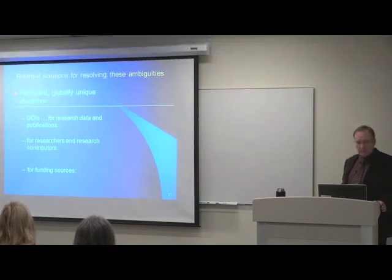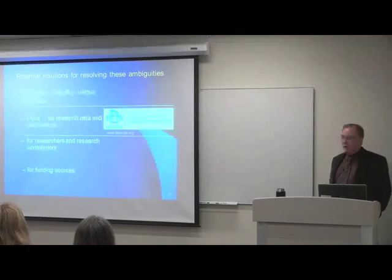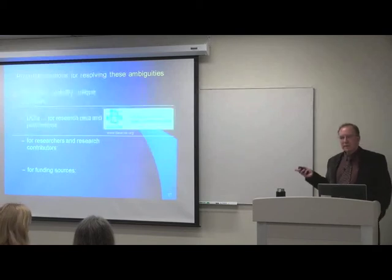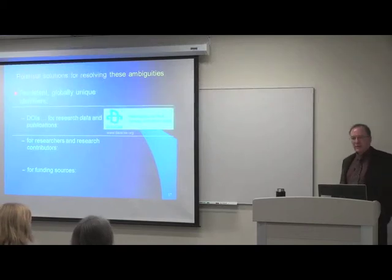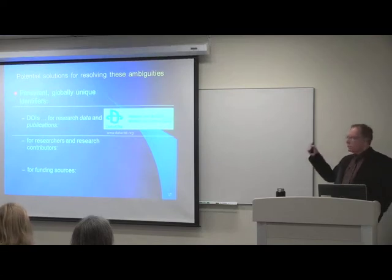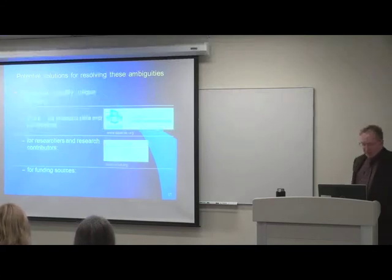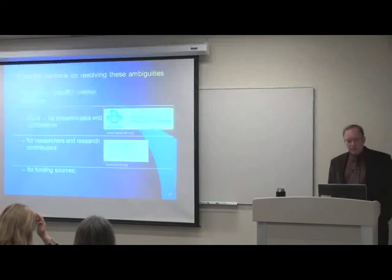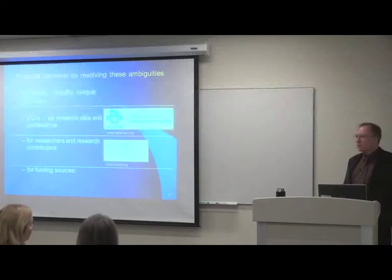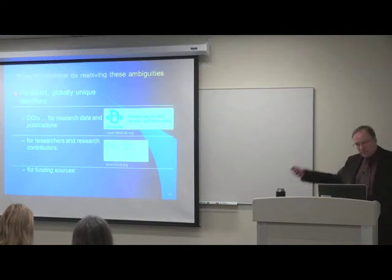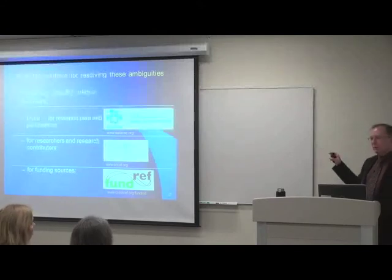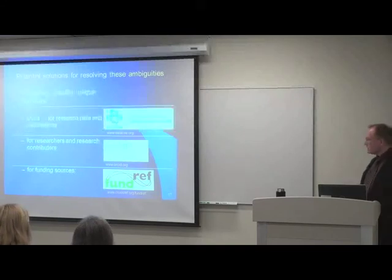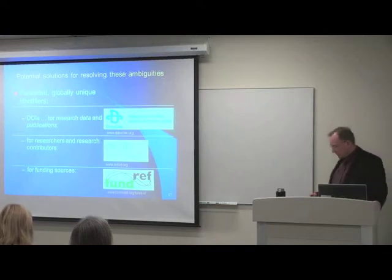There are potential solutions for resolving these ambiguities. One is the well-known Digital Object Identifier, which can be applied to data and publications and is already familiar to researchers from journal articles. Here at AU we're looking at using DataCite as a provider of DOIs for datasets. For researchers and contributors such as graduate assistants, there's the Open Researcher and Contributor Identifier — ORCID — and we'll be looking into educating researchers about ORCID and possibly providing services to generate ORCIDs. For funding sources, there's a recent development called FundRef, which disambiguates funding agencies by assigning specific codes that can be linked to research output and researchers.